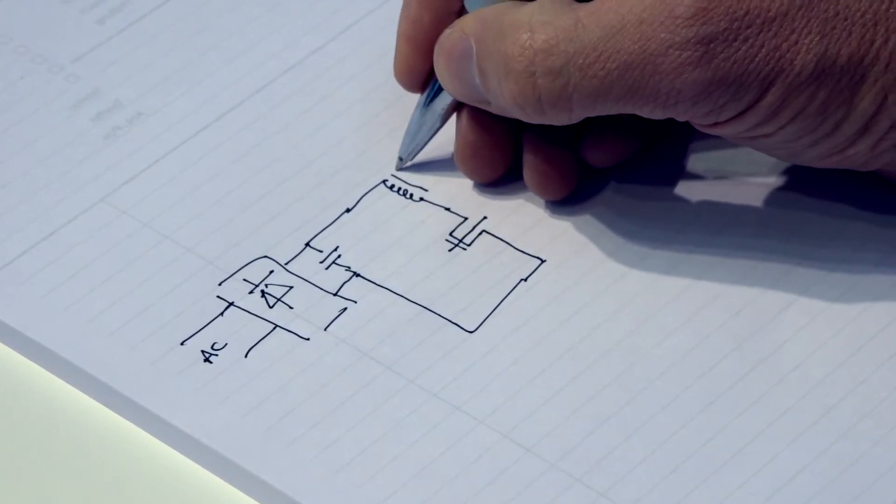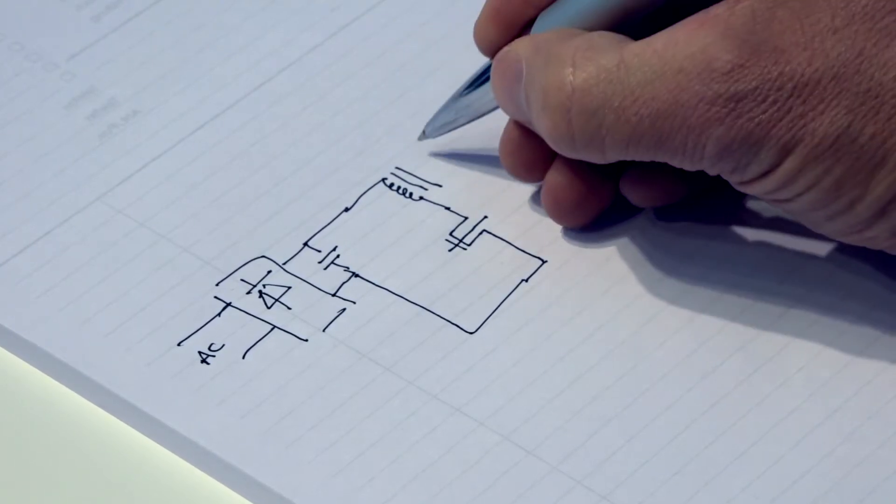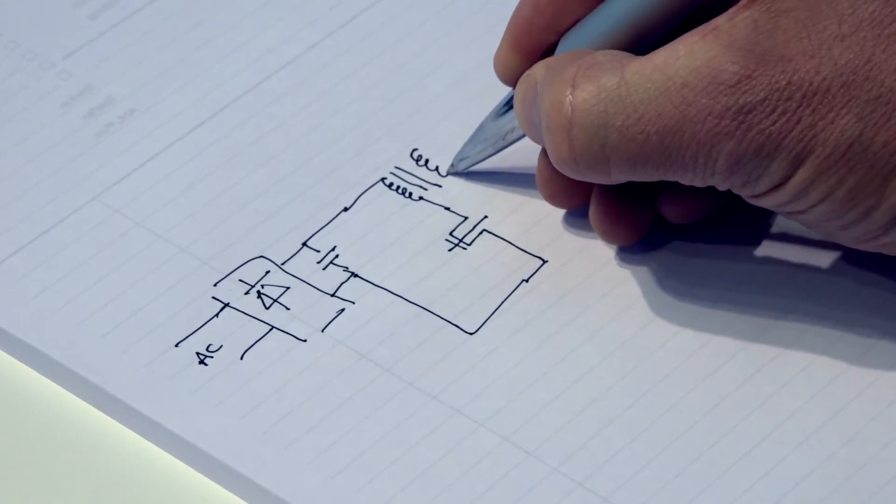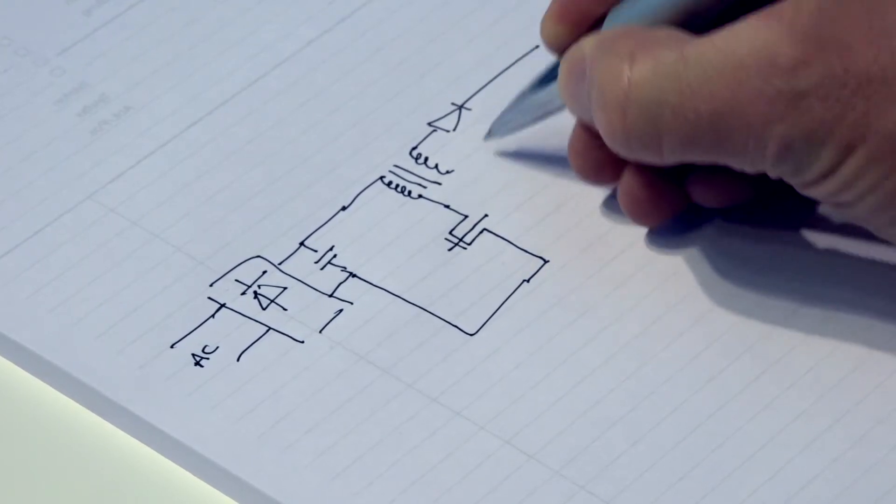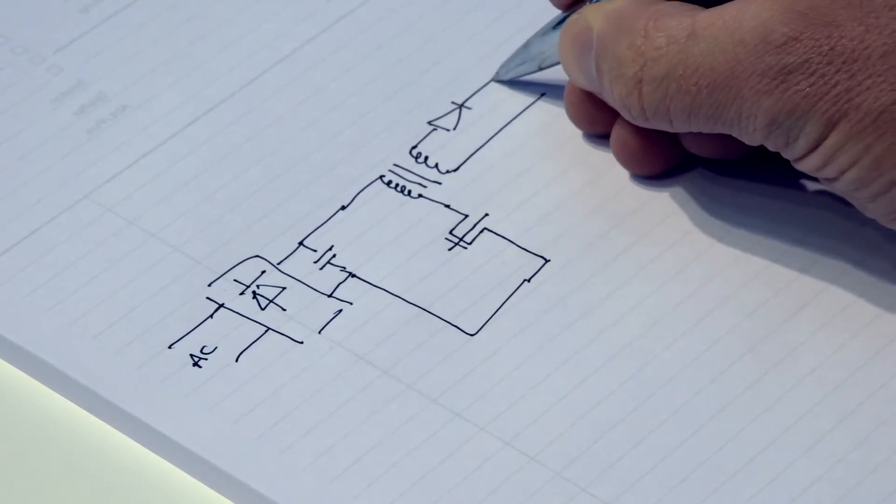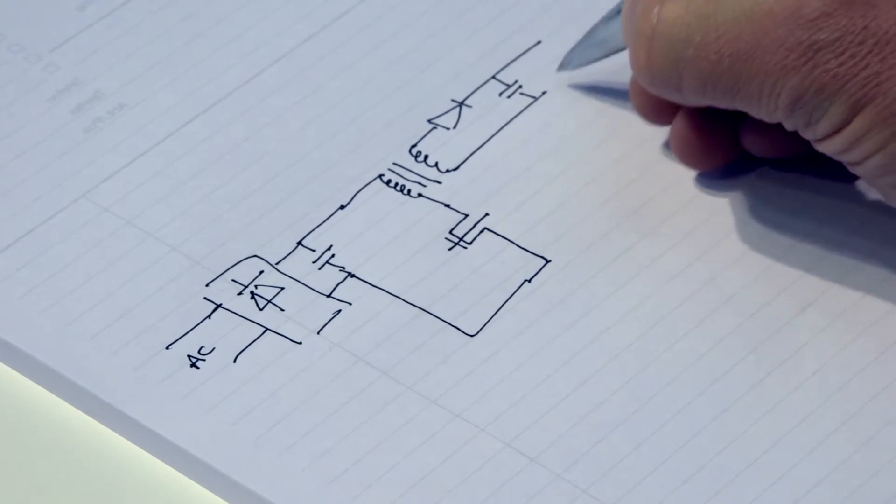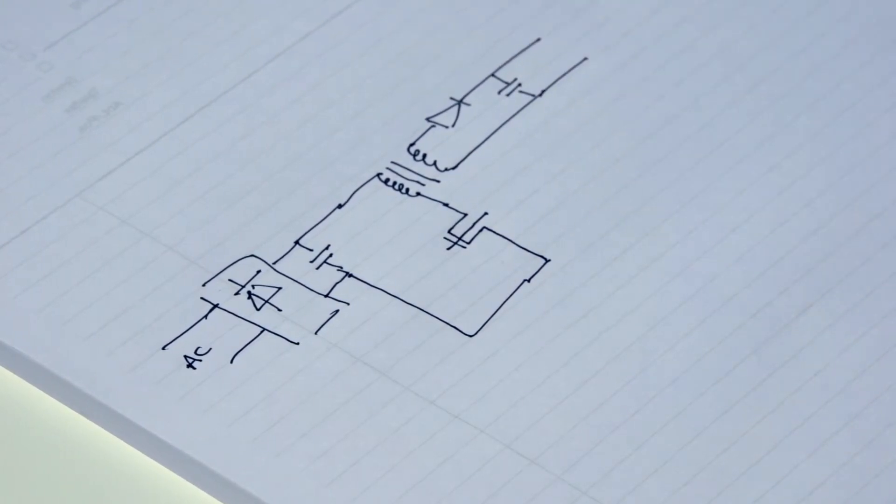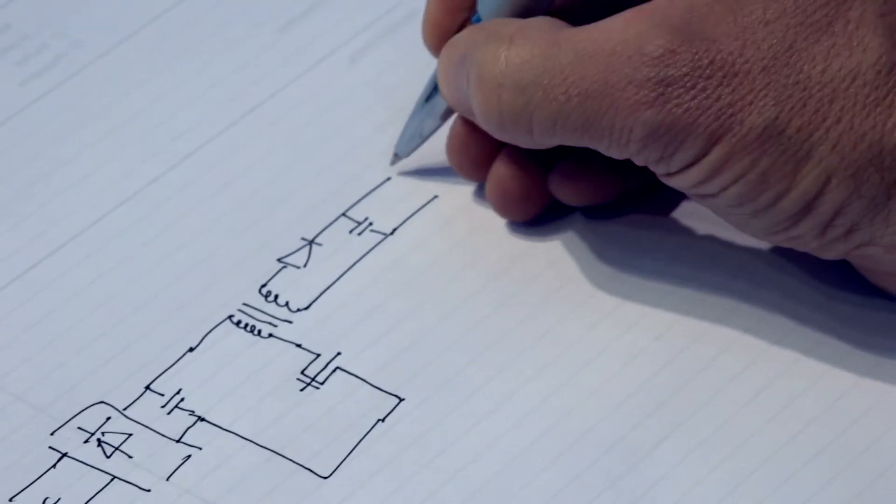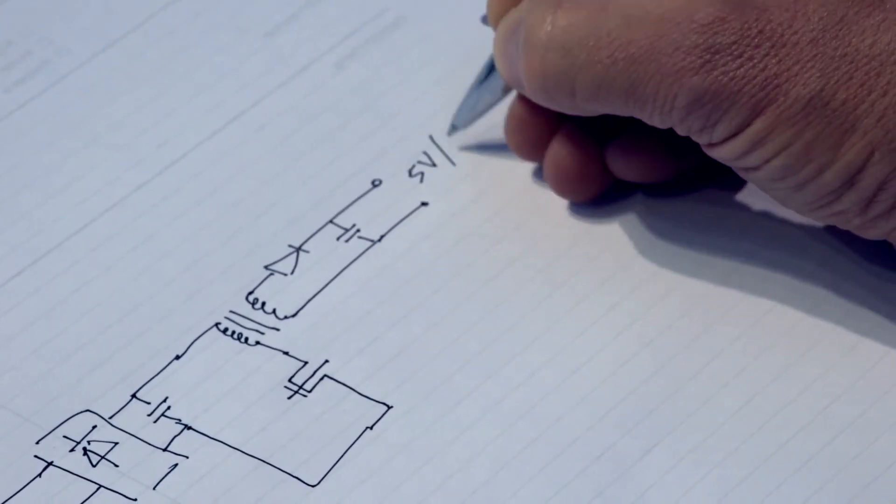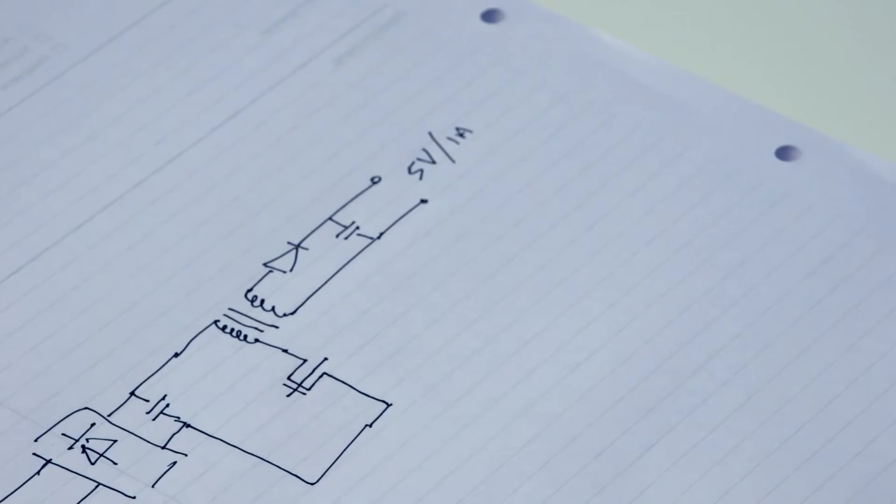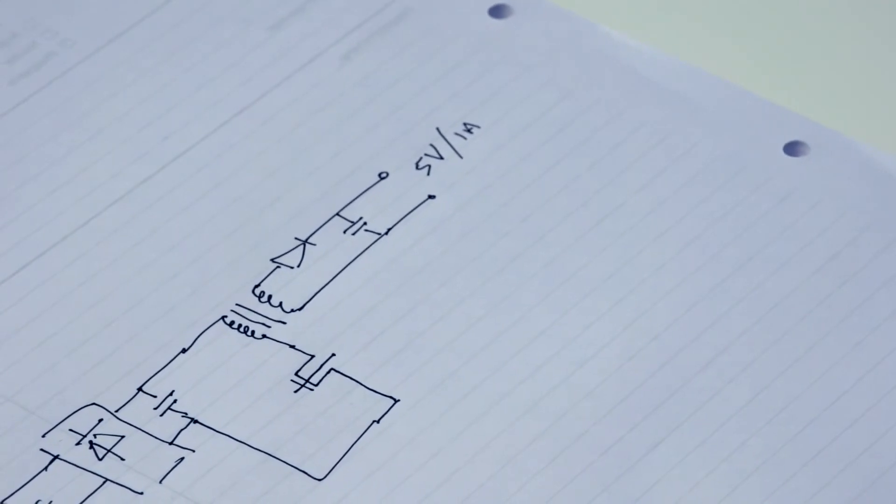This transformer is a safety rated element and it couples the energy into the secondary side which re-rectifies and the energy and converts it down to low voltage. So this might be a 5 volt one amp output would be typical for a charger for a cell phone